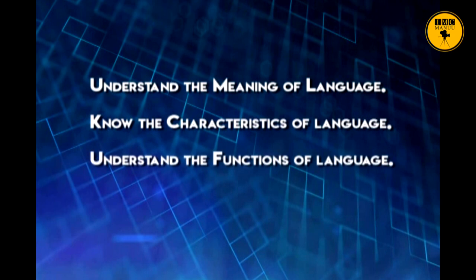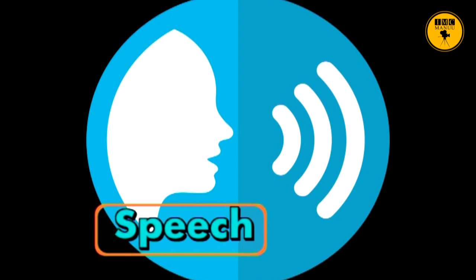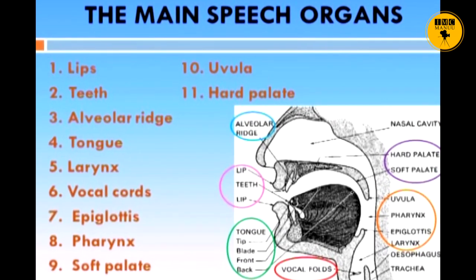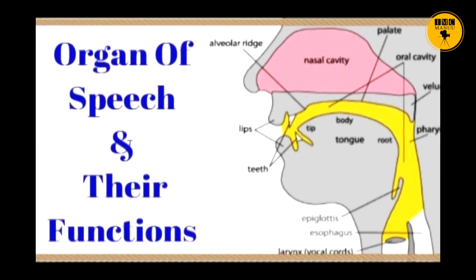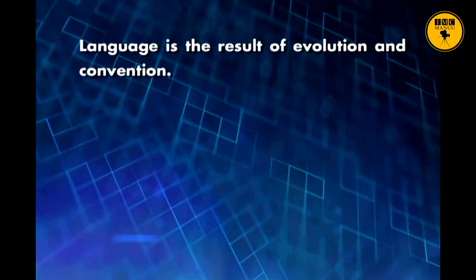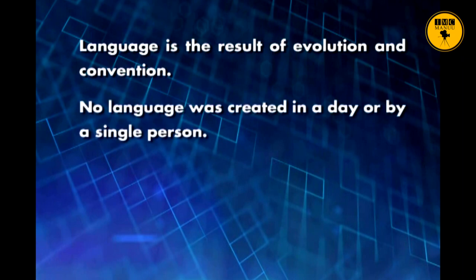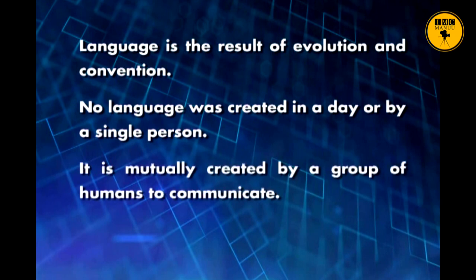This video lesson will enable you to understand the meaning of language, know its characteristics, and understand its functions. Mankind in the early ages observed other living creatures making noises to communicate their feelings. Gradually, human beings also acquired the skill of communicating a large number of things through what we now call language. Human beings alone have the complex skill of using language through speech and writing. We use our vocal organs to make different sounds, sound clusters, words, phrases, and sentences. Language is the result of evolution and convention — no language was created in a day or by a single person.